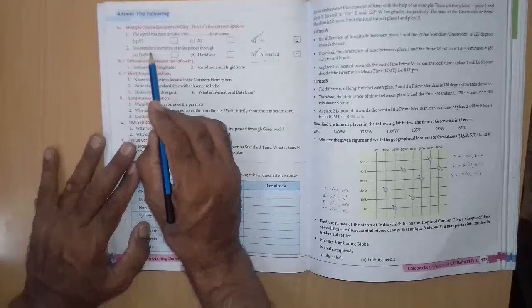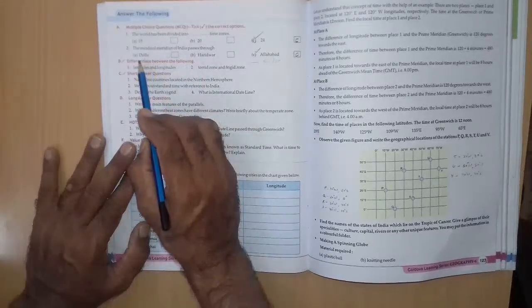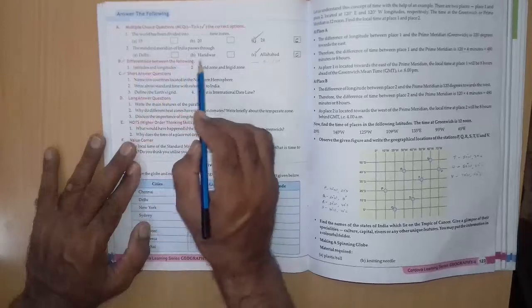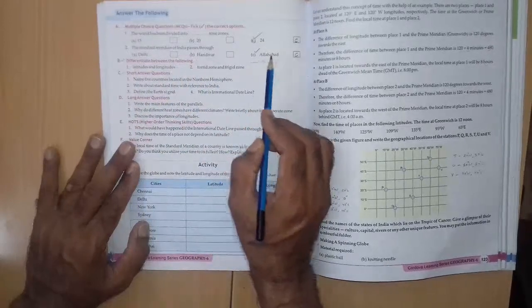Second question. The standard meridian of India passes through A Delhi, B Haridwar, C Allahabad. Right answer is C, Allahabad.